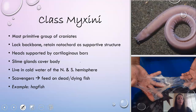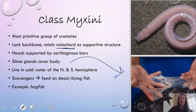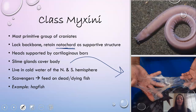First, a little bit about class mixinni. These are the most primitive craniates. They have that cranium, but they are the oldest and they really don't have a lot of the more advanced structures that other fish have. They do lack a backbone, but they do have that notochord, which is a supportive structure. They have cartilaginous bars in their head and slime glands that cover their body. You can see an example of the slime on these hagfish. They use that to maintain their ability to move through the water and they live in typically colder waters of both the northern and southern hemisphere, feeding on dead or dying fish.